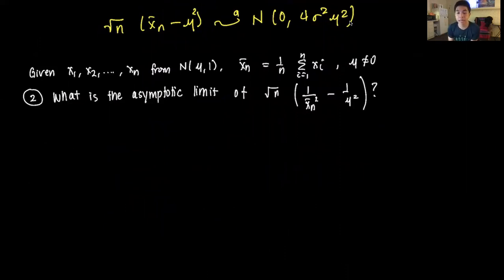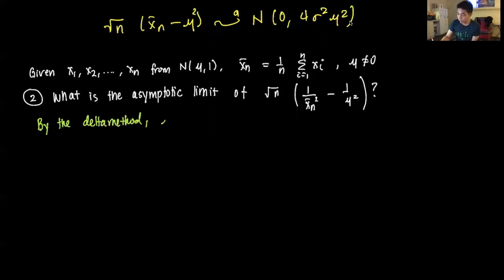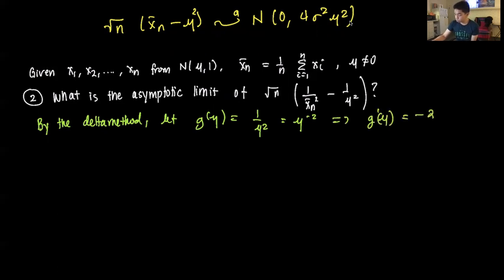For the next example: what is the asymptotic limit of √n · (1/x̄ₙ² - 1/μ²)? This is a bit trickier, but we apply the same approach. By the delta method, we let g(μ) = 1/μ² = μ⁻², which implies g′(μ) = -2μ⁻³ = -2/μ³.